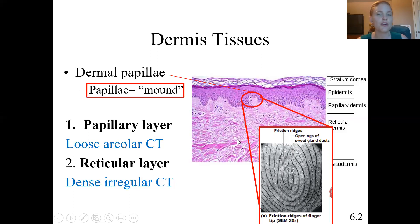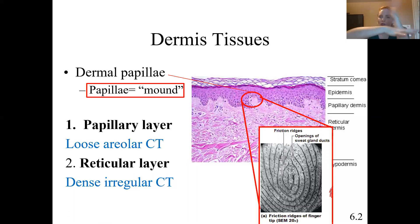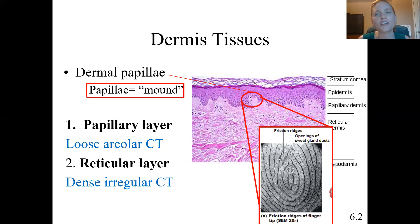Underneath the papillary layer is the reticular layer, which is made up of dense irregular connective tissue. It's irregular because the collagen fibers run in multiple directions — not parallel — which creates flexibility and strength in multiple directions. When you pull on your skin, the collagen in the reticular layer provides that recoiling effect. As we age and lose collagen, that's what makes skin droopy and causes wrinkles.